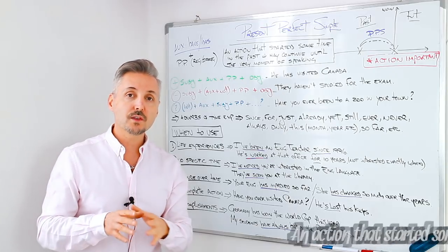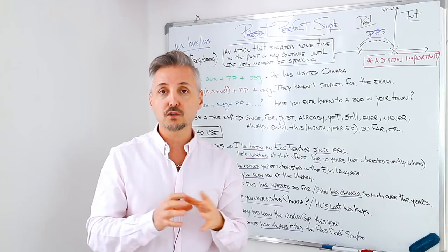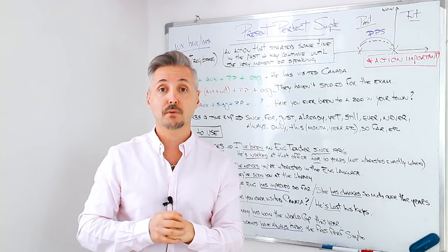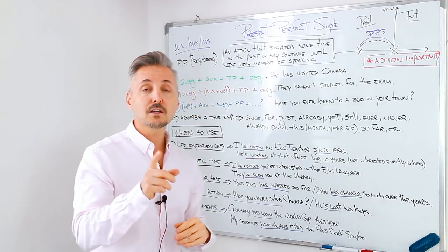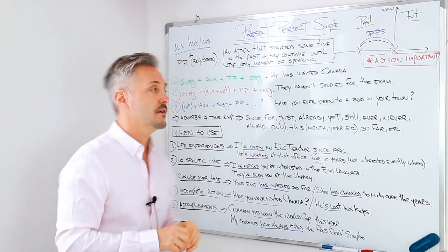So the when is not important, the action however it is. And here I wrote an action that started sometime in the past and may continue until the very moment of speaking. I'm going to show you this with different rules and different keywords to help you understand when to use the present perfect simple. So let's go to the formulas now, the three types of sentences.